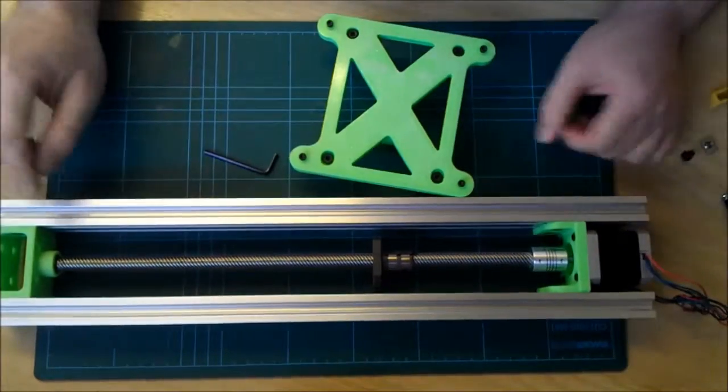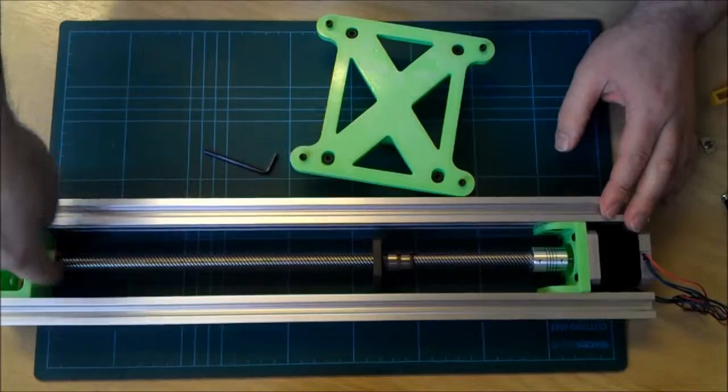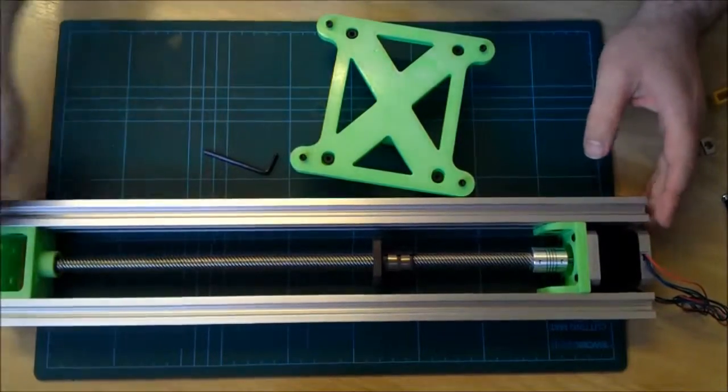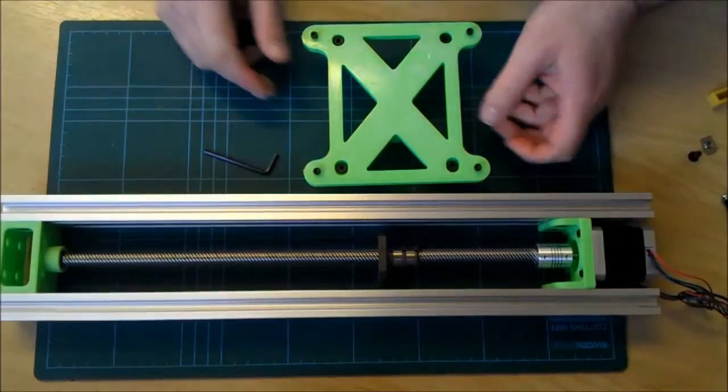Make sure this is the right way up, which is with the bearing end. It's got a nib at the bottom which is what's supposed to be facing the bottom, so that's around the right way.